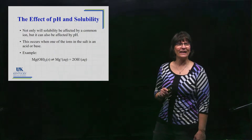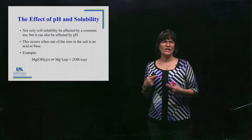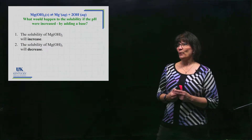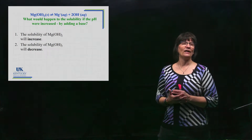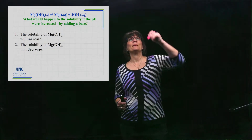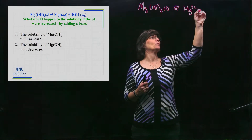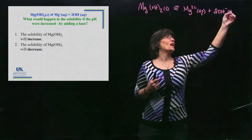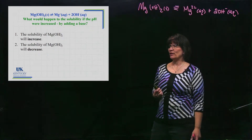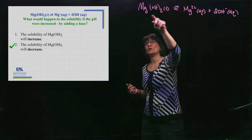Here's an example: magnesium hydroxide. Not exactly a salt, but it is an ionic compound and it's not very soluble. It has an OH in it, so it's easy to see how pH would affect solubility. We're going to think about Le Chatelier's principle and the addition of a base. Adding a base will push the reaction toward forming more solid, which decreases the solubility.